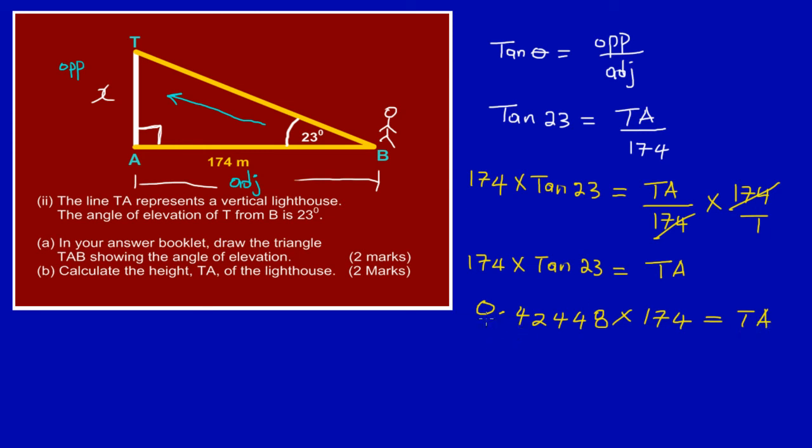Now pretty much if I should multiply out this with 174, my answer TA is equal to, let's see, 73.859 meters. Now given the fact that they are using whole numbers here, if you notice they are using whole numbers, I'm just going to round off mine to the nearest whole number.